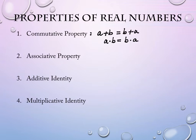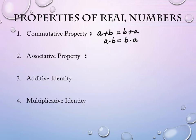The order doesn't matter for addition and multiplication of real numbers. The commutative property is one you use all the time and never think about it. Never does someone say 'what's five times six?' and you have to say in your head, 'well, that's the same as six times five.' We don't think about using it at all, and we use it all the time.